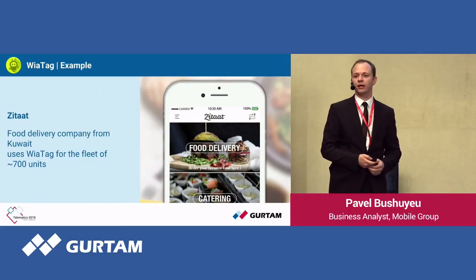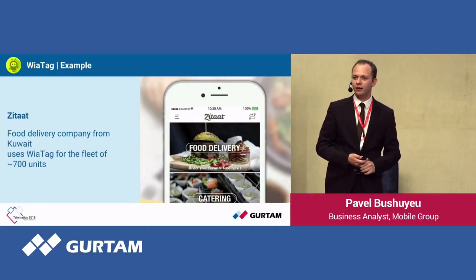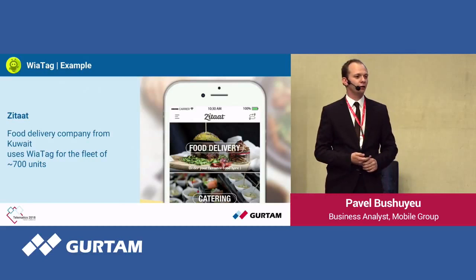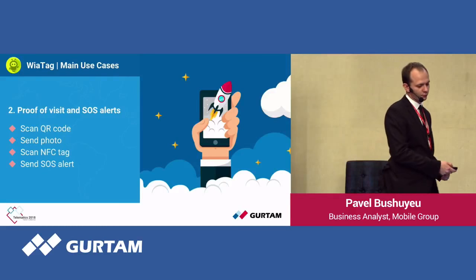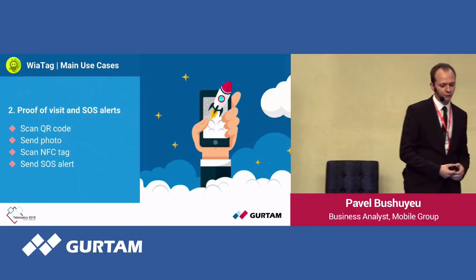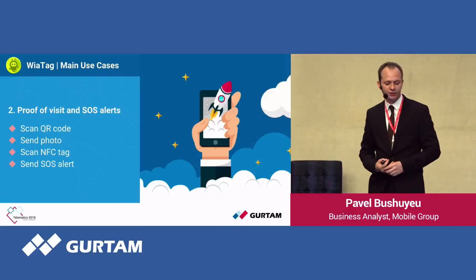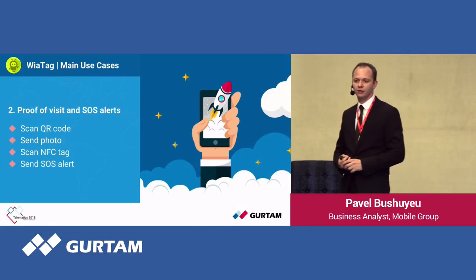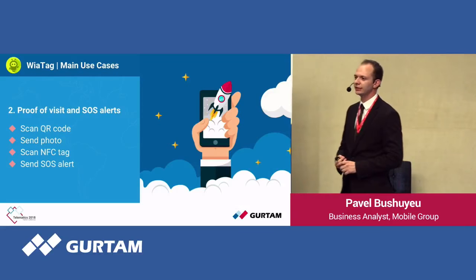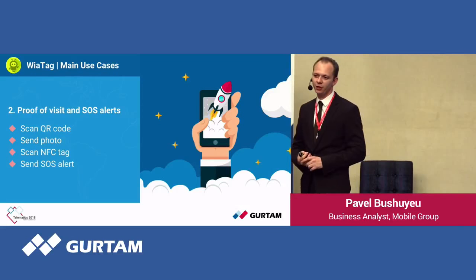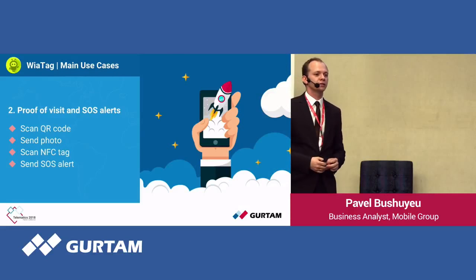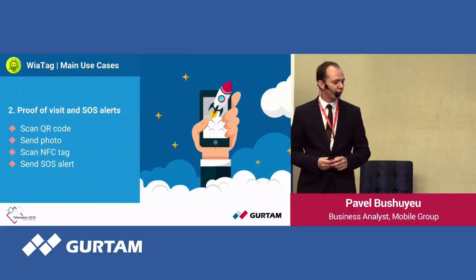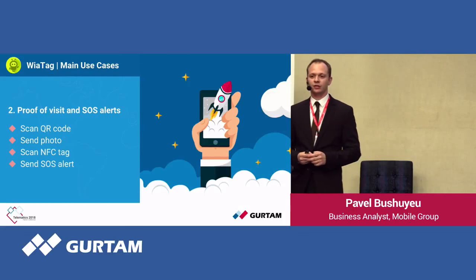So Vitec helped them to prove their idea and prove it to be viable. The second use case is proof of visit and source alerts. Inside the application, you may scan a QR code, send a photo, scan an NFC tag, and send a source alert.